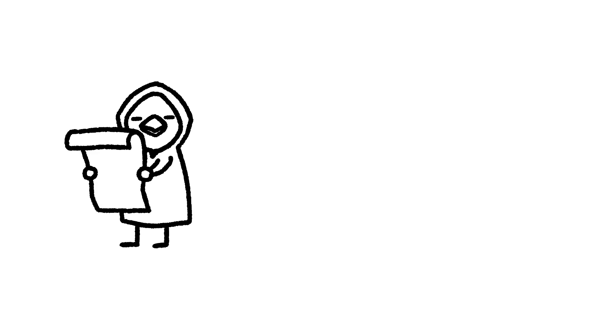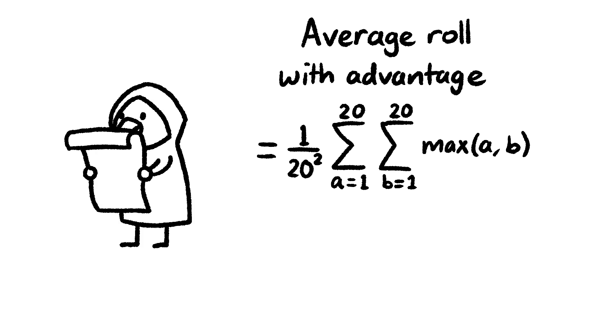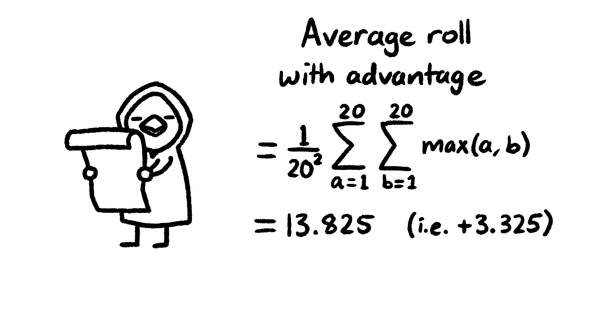One thing that a lot of people do is average all the possibilities with a uniform distribution, and state that the average roll on the higher of two D20s is 13.825. This would give a modifier of plus 3.325, note that the average roll on a single D20 is actually 10.5 and not 10, confusingly. However, this is making the bold assumption that all difficulty classes appear equally often, which is not true at all.